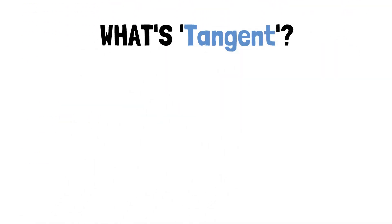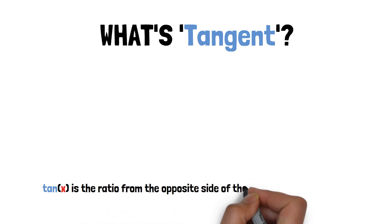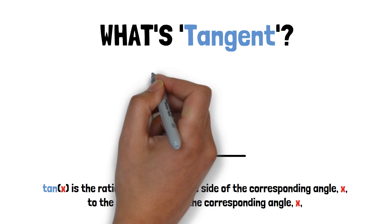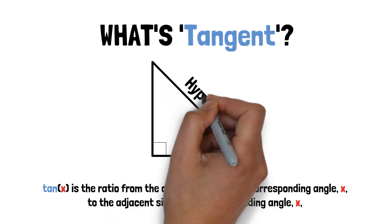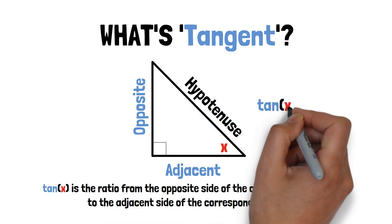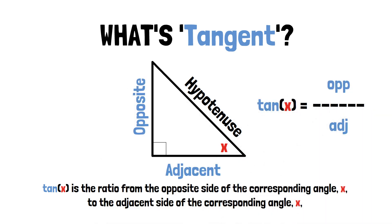And lastly, what exactly is tangent? Tangent of x is the ratio of the opposite side over the adjacent side of the corresponding angle. As you can see, the opposite side is over the adjacent side.